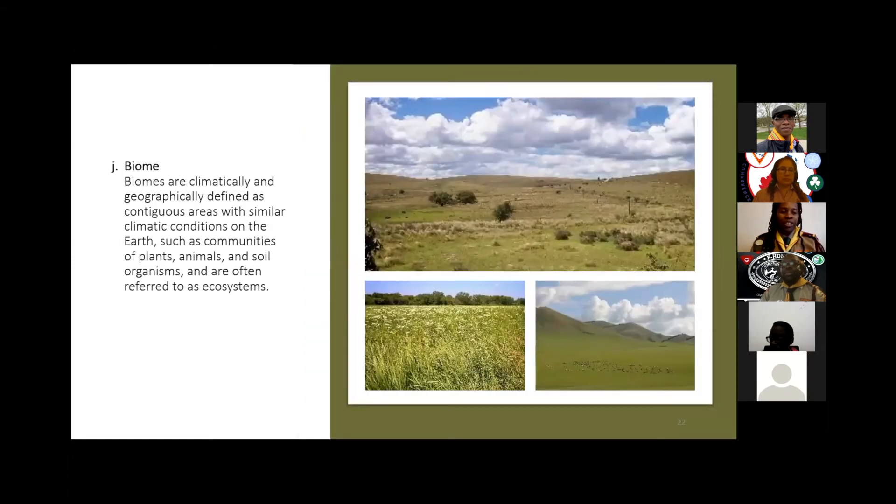Biome: a community of plants and animals that have common characteristics for the environment they exist in. They can be found over a range of continents. For example, in the pictures here we have a temperate grassland or shrubland biome known commonly as steppe in Central Asia, prairie in North America, and pampas in South America. They all look the same. Simply put, it's a large distinct territorial region with similar climate, soil, and organisms regardless of its global location.